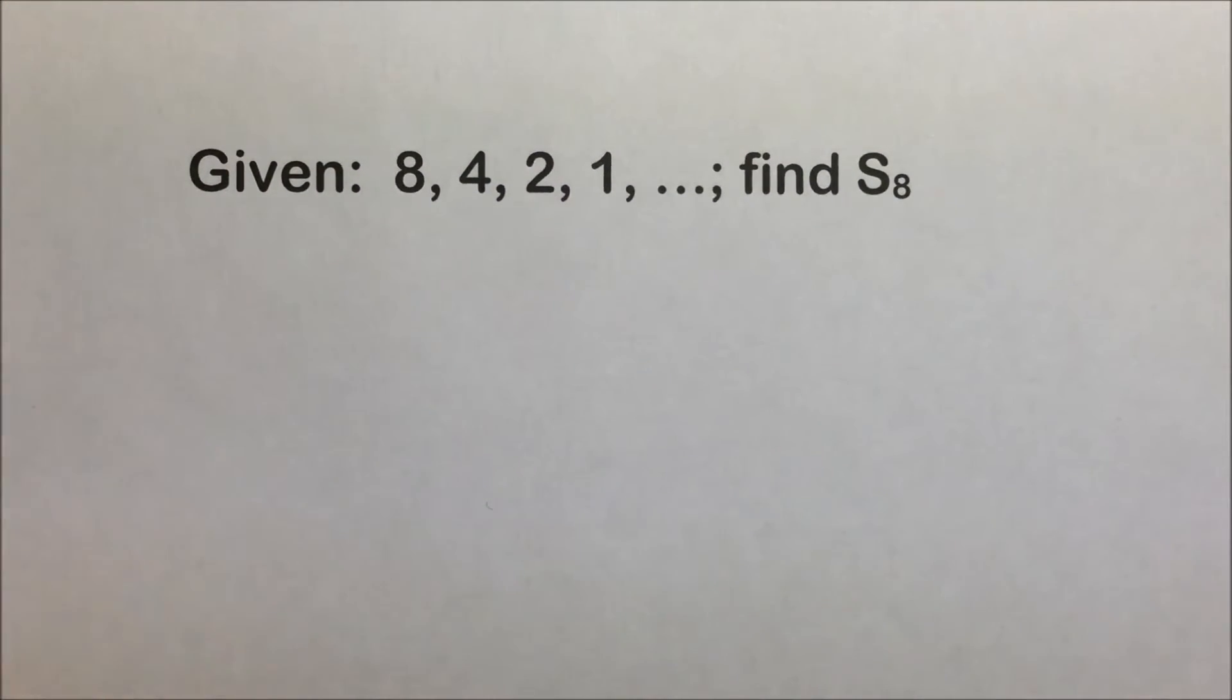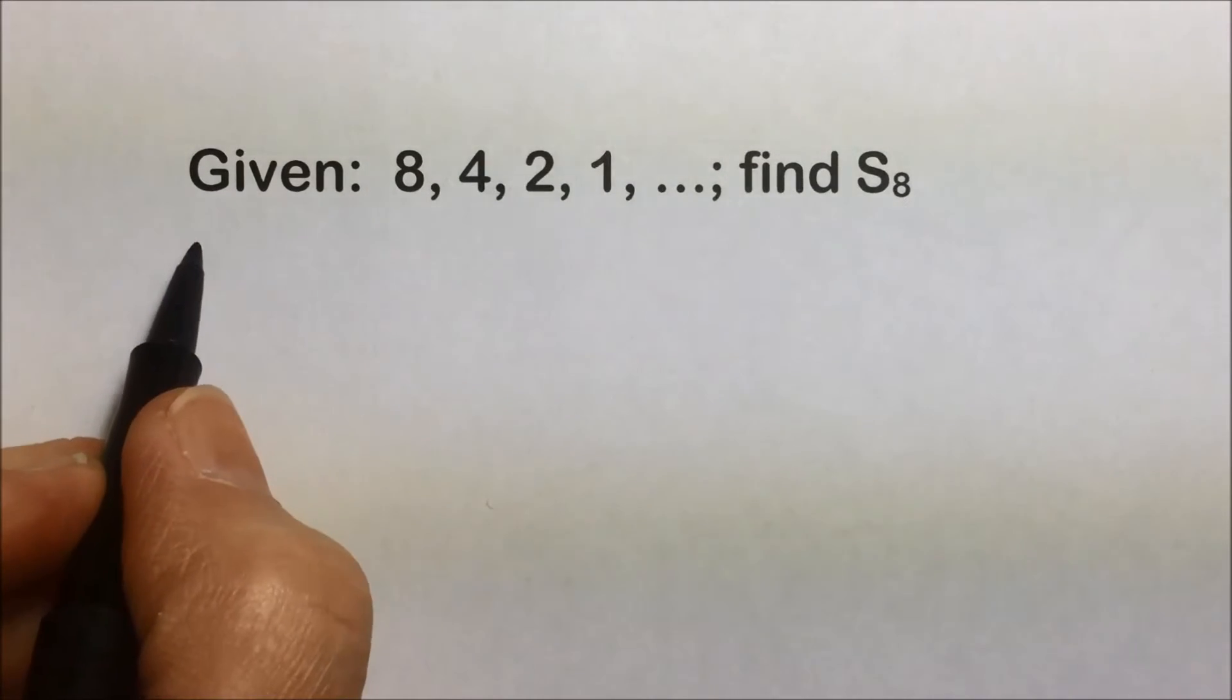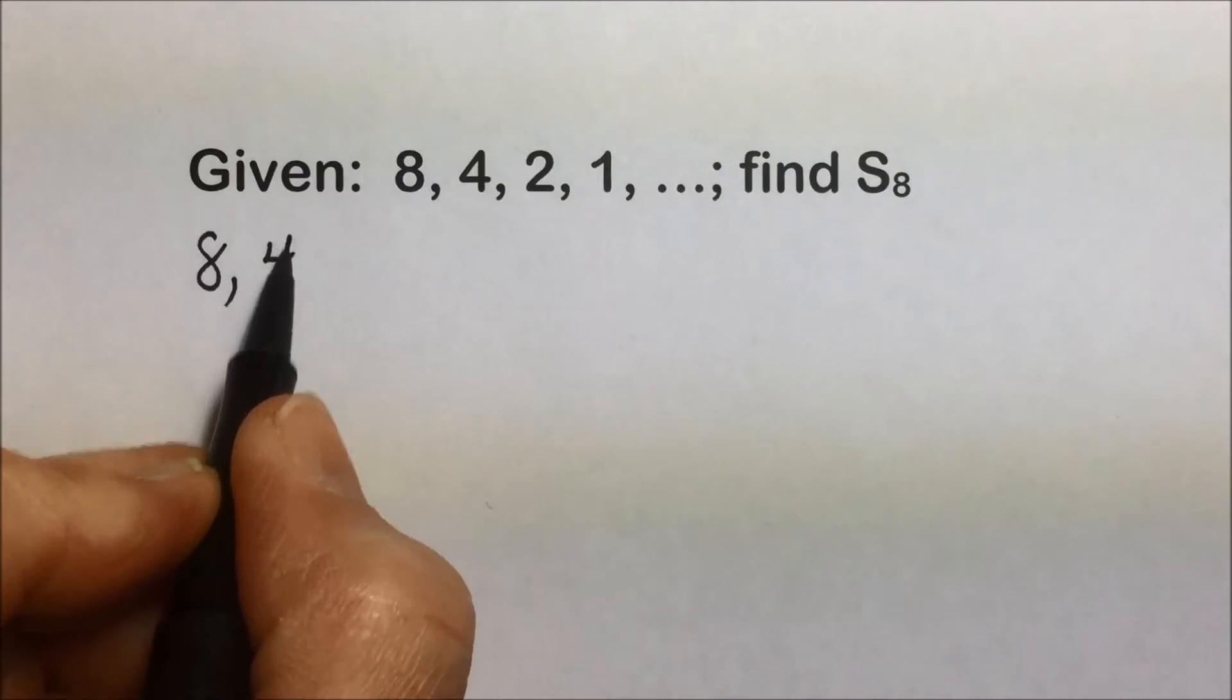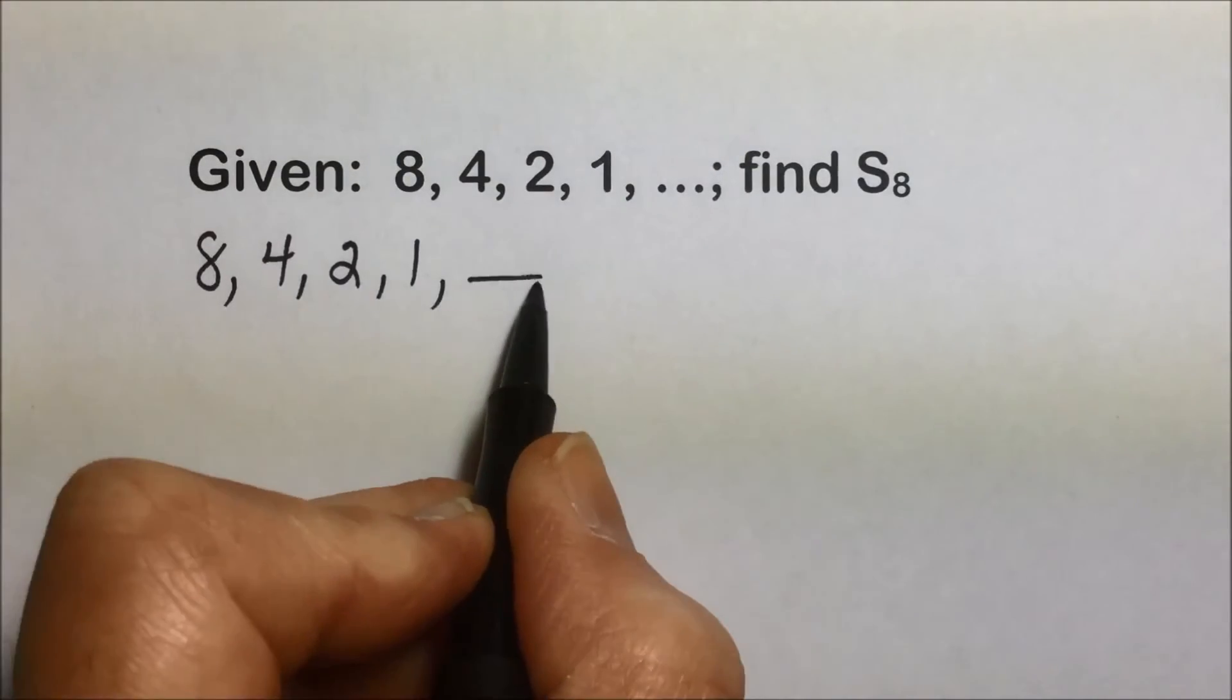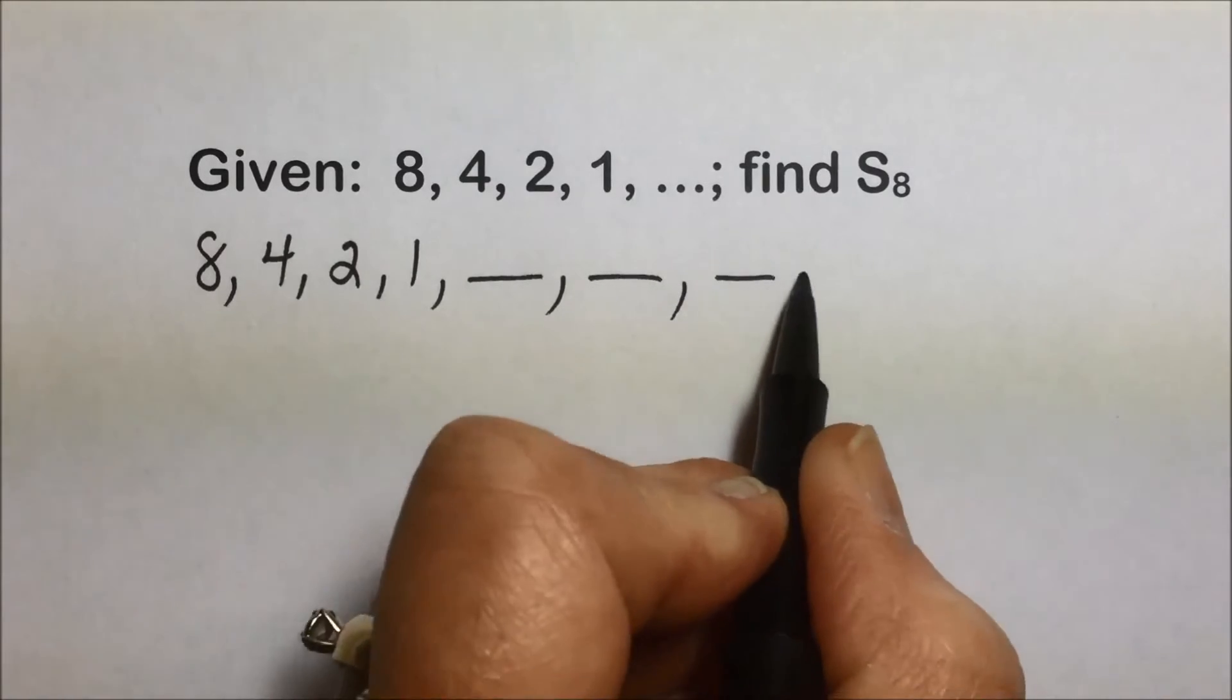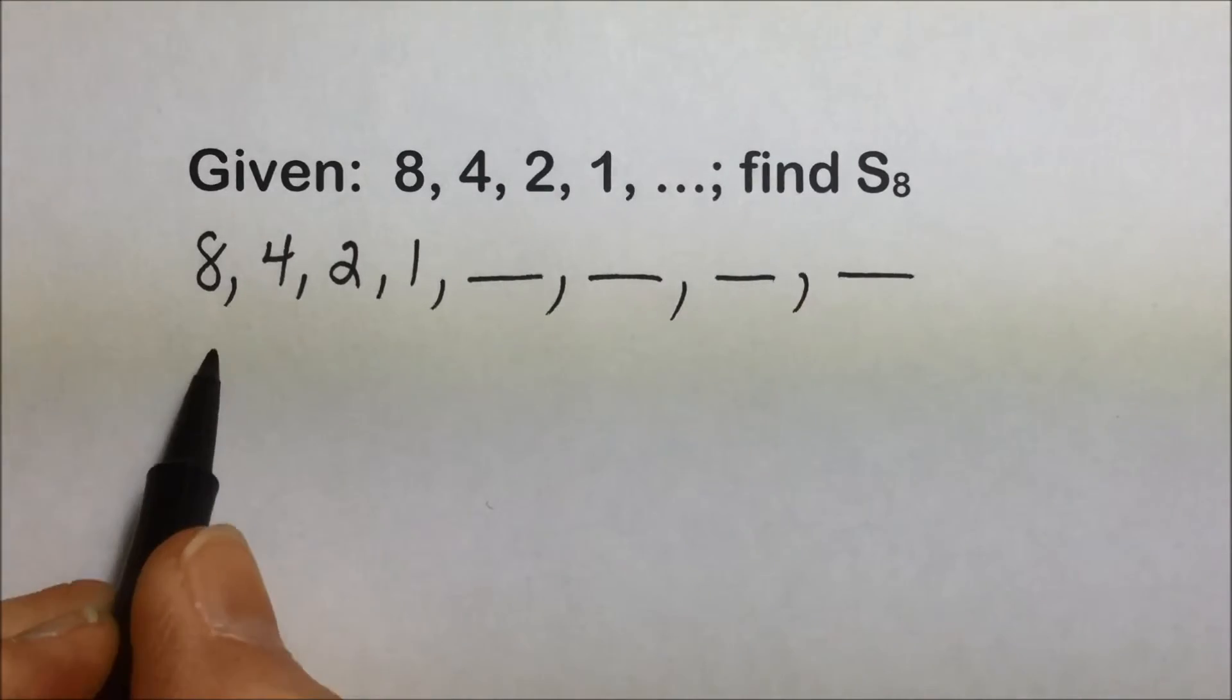We're given an infinite sequence here without the general term, and they're asking us to find the series or the sum of the finite series of the first eight terms. So we're going to, again, we're missing some terms clearly here. We have the first four, but we need the 5th, the 6th, the 7th, and the 8th term.